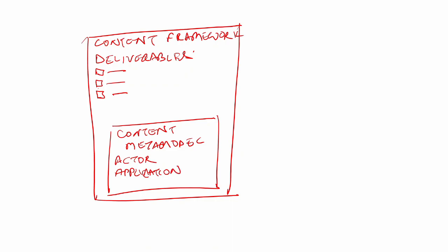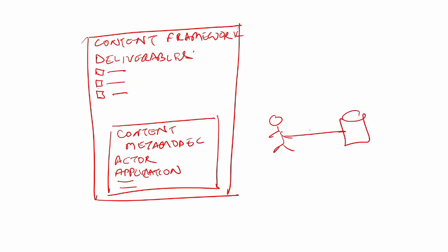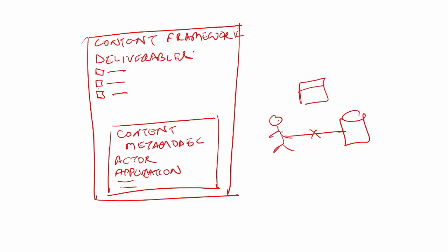Not only does the content metamodel describe a list of all the building blocks you can use to create artifacts, it also describes the potential relationships between these building blocks. For example, an actor cannot directly access a data entity. A data entity is a building block and an actor is a building block, but there is no direct relationship between them. To manipulate or use a data entity, an actor requires one of two things: either a physical application component — you need an application to access that data — or a physical technology component. For example, if it's an Oracle database, you would require an Oracle client; if it is a SQL Server database, you will require SQL Server Management Studio to write queries and manipulate the data. These relationships are described in the content metamodel.